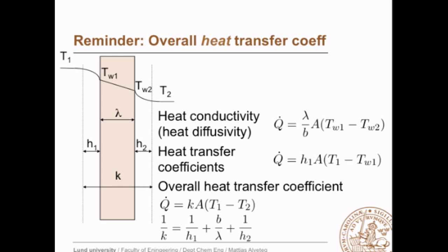Let's try to remember what an overall heat transfer coefficient is. If you have a wall, you have a temperature on the inside, a temperature on the outside, and temperatures on each side of the wall. You can define the heat conductivity as the heat flux equals the heat conductivity divided by the thickness of the wall times the area times the temperature difference. Heat transfer coefficients tell us the heat transfer from the inside to the wall and from the wall to the outside. Using the steady-state assumption — that Q equals Q — we can calculate the overall heat transfer coefficient, defined by: heat transfer equals the heat transfer coefficient times area times the temperature difference from one side to the other.